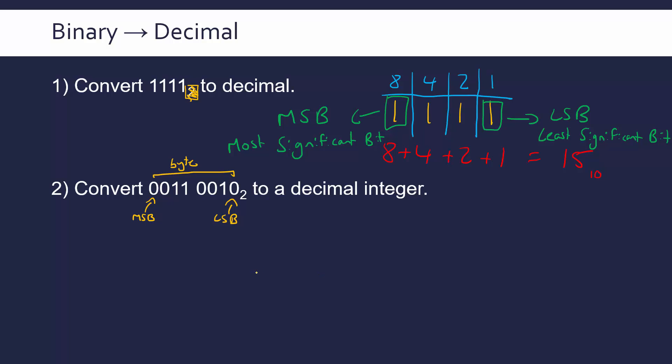Okay, first step to convert is to write out the number. Next step in the method I would use at least is to add in the table. So always starting at 1, 2, 4, 8, 16, 32, 64 and 128, just doubling each time. And now I'll add in the lines.